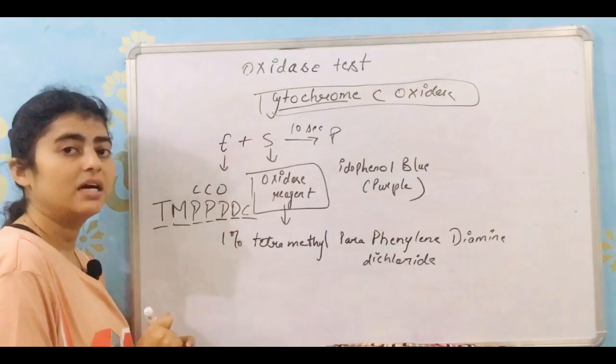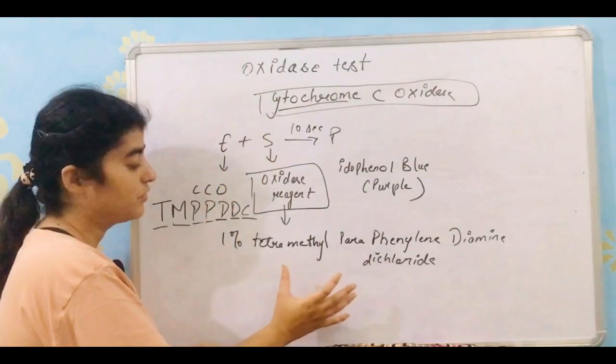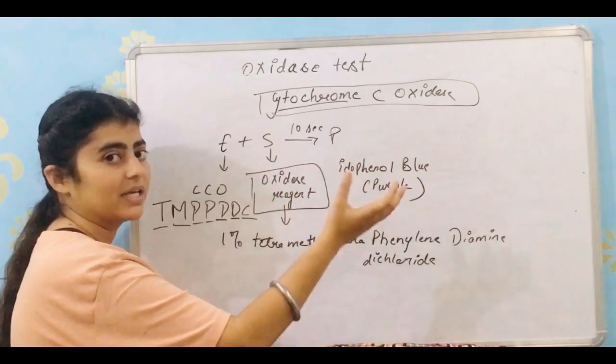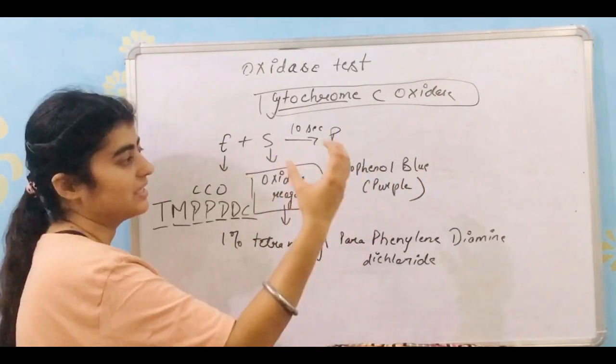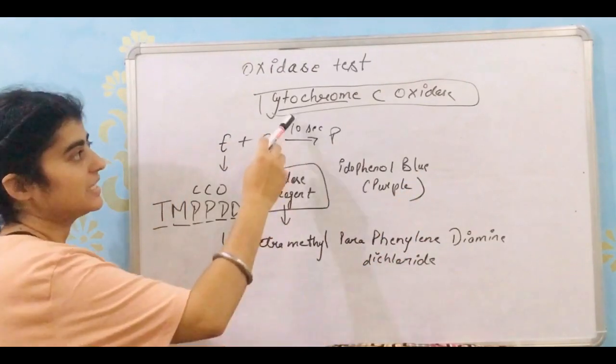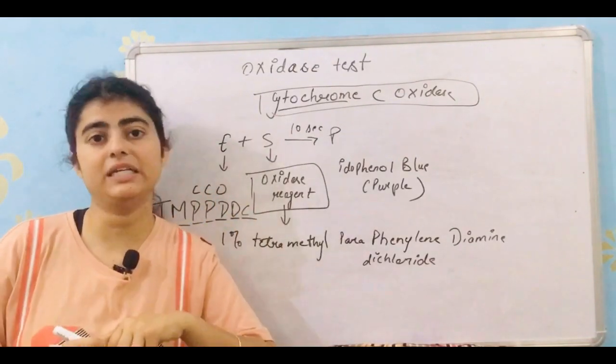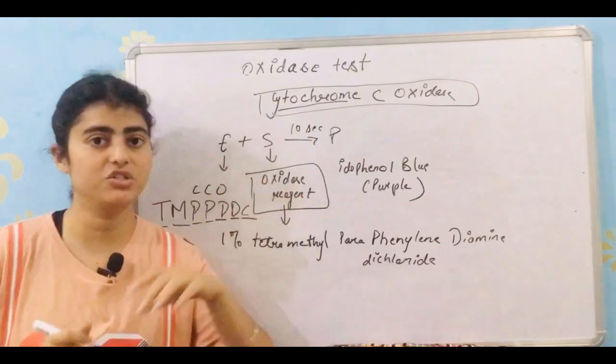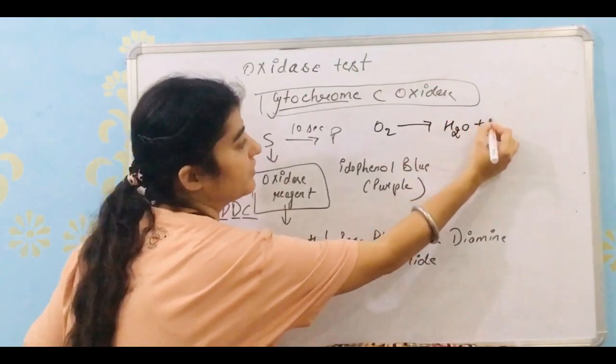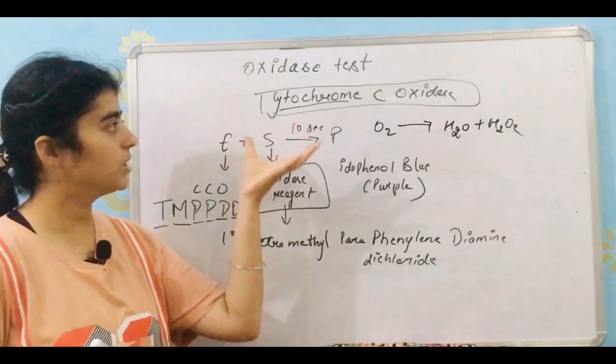But what would this enzyme do? Because cytochrome participates in electron transport chain. In the similar way, it would also accept electrons from this oxidase reagent and oxidation would take place, and then the end result would be idophenol blue that would be purple in color. Or we can say that the cytochrome C oxidase uses oxygen inside the bacteria to produce its energy, means it uses oxygen to produce energy in the form of H2O or H2O2. So this is all about oxidase test.